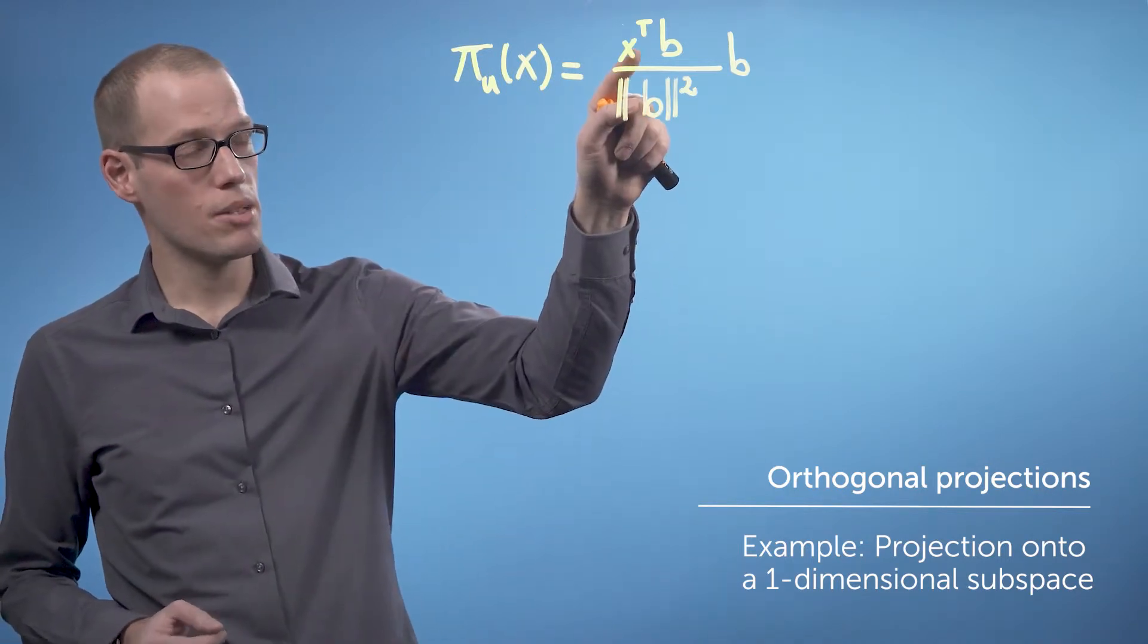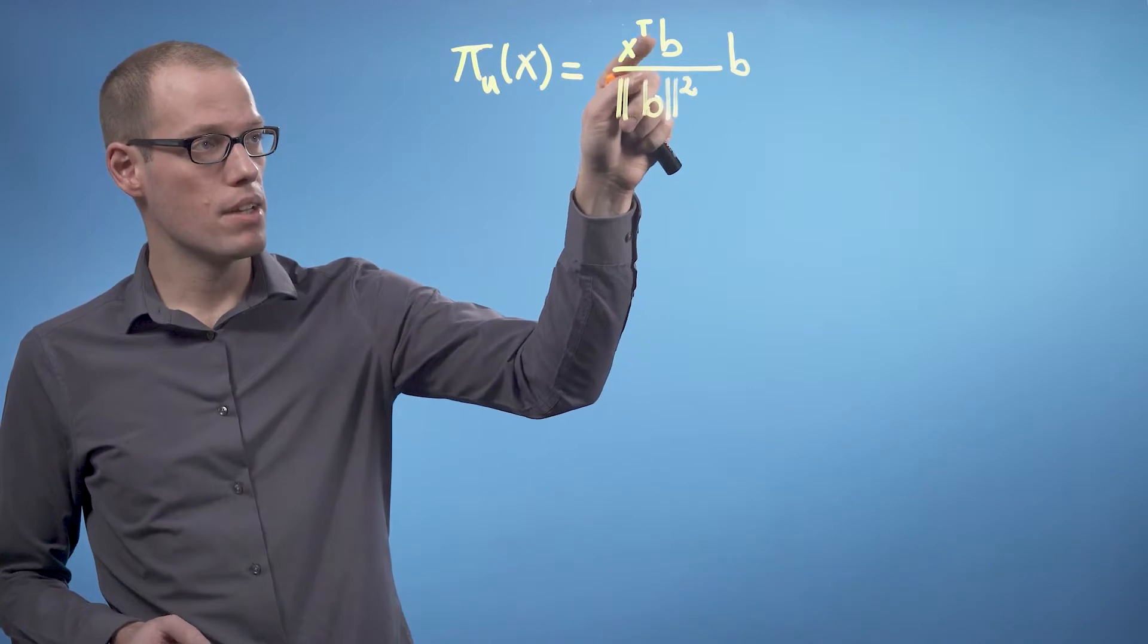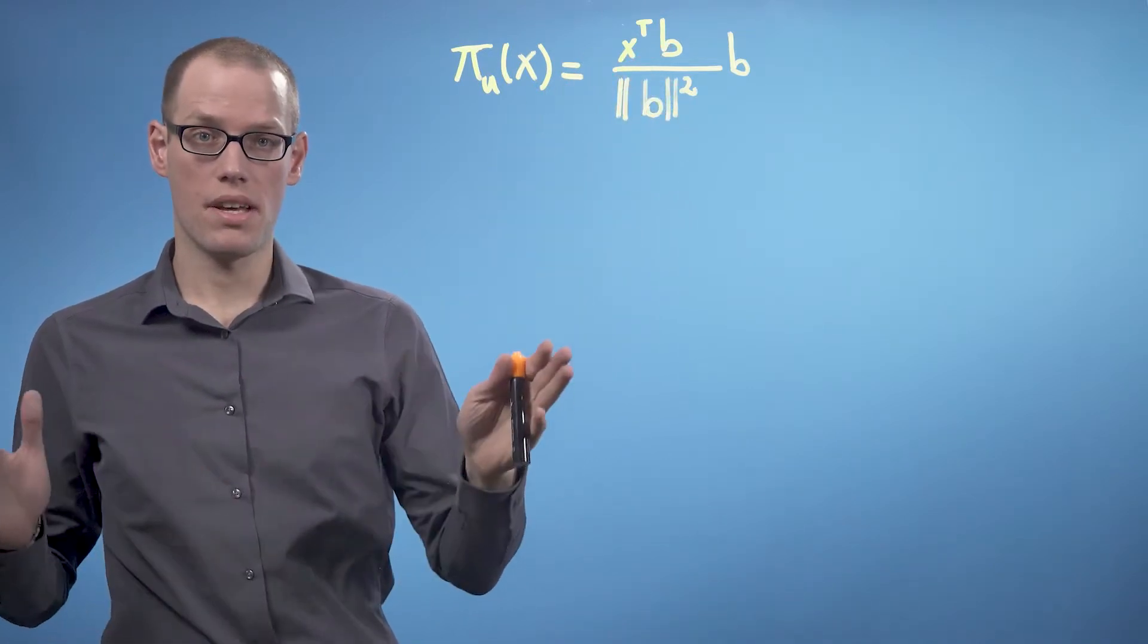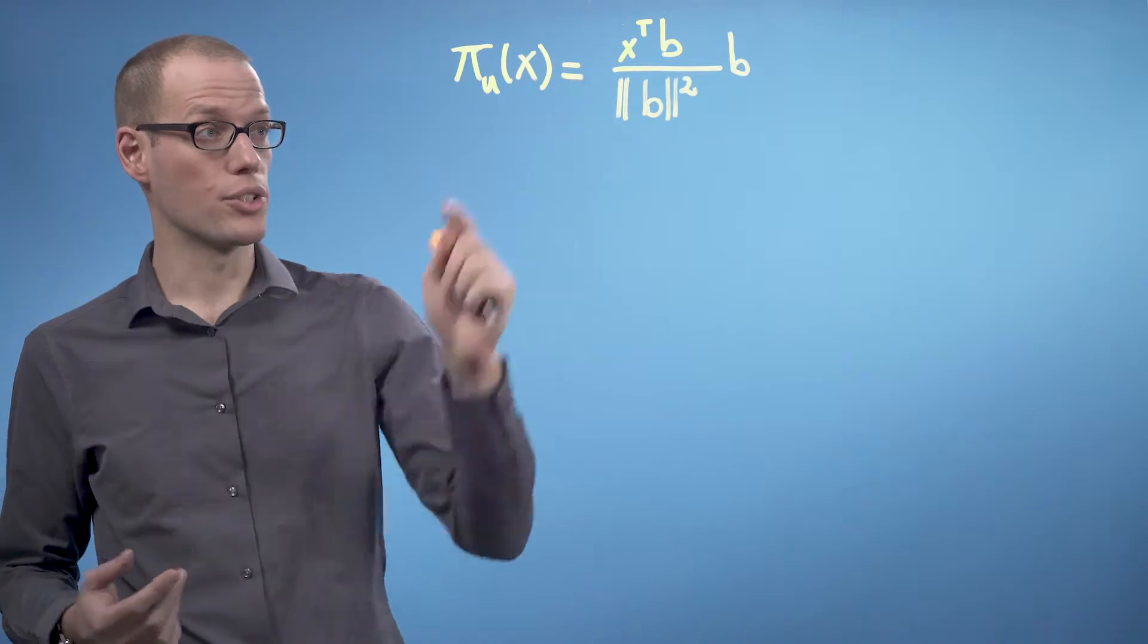Here, x is a d-dimensional vector and b is the basis vector that spans that one-dimensional subspace that we want to project x onto.